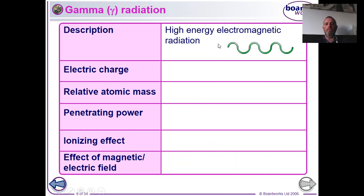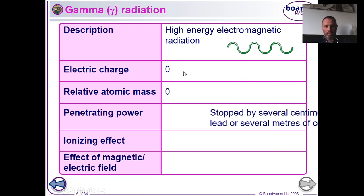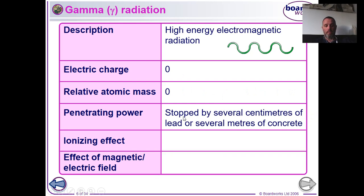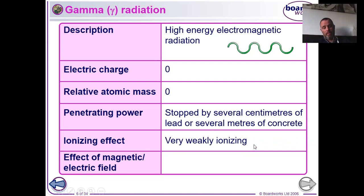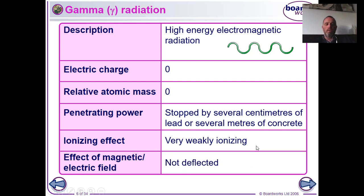Finally, gamma radiation is high-energy electromagnetic radiation with very high frequency and very short wavelength. It has no electric charge and no mass, which gives it very high penetrating power — you need centimetres of lead or metres of concrete to stop it. It is very weakly ionising because it doesn't interact much with atoms and doesn't knock many electrons off. It is not deflected by a magnetic or electric field because it has no charge.